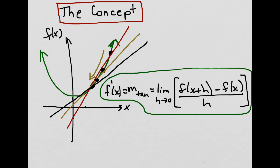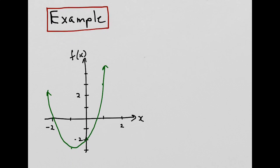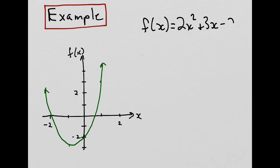We write this as follows: the slope of the tangent is equal to the limit as that distance h approaches zero of the slope of the secant. We use the notation f prime of x to represent this slope, and this becomes our definition of a derivative. Now that we have the definition of a derivative, let's apply it to an example. Let's say we wanted to find the derivative of this function.